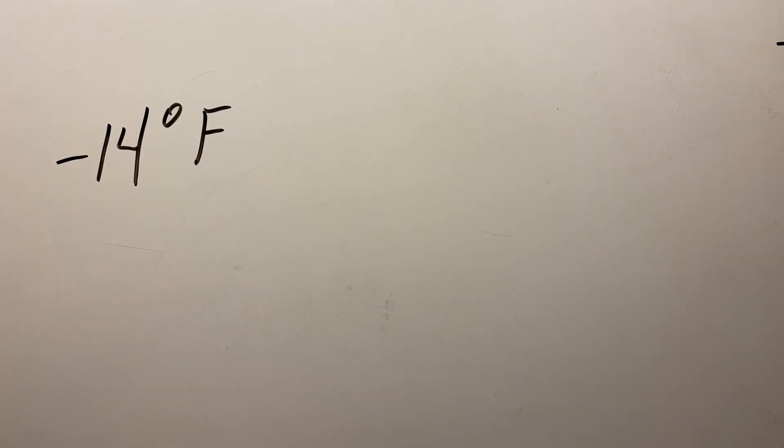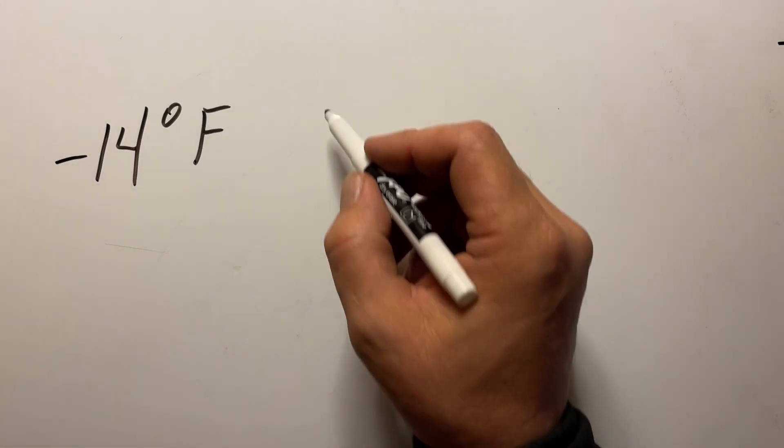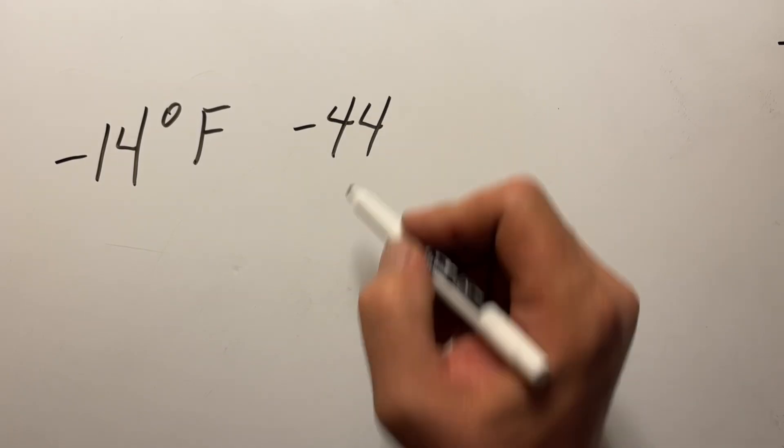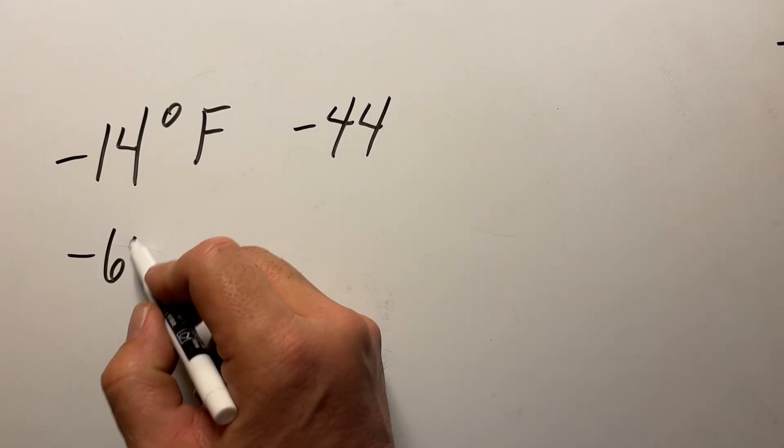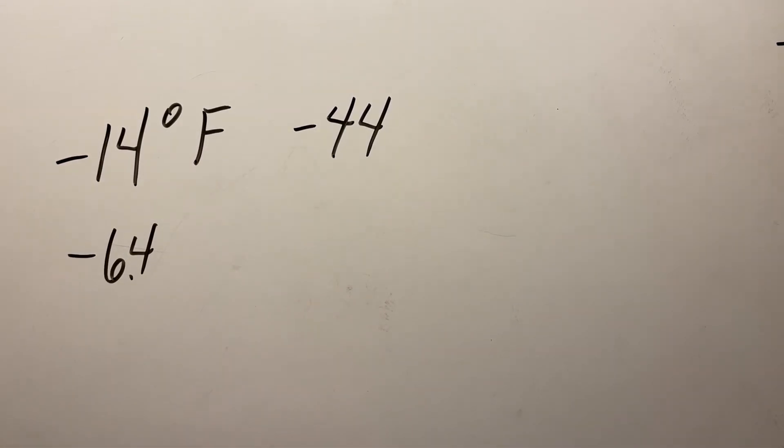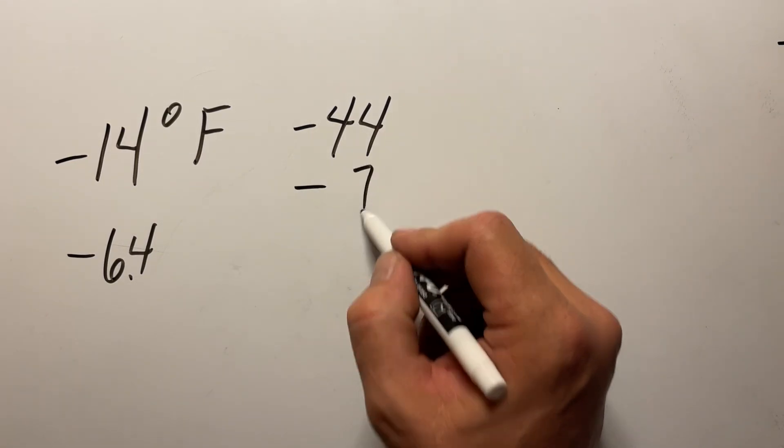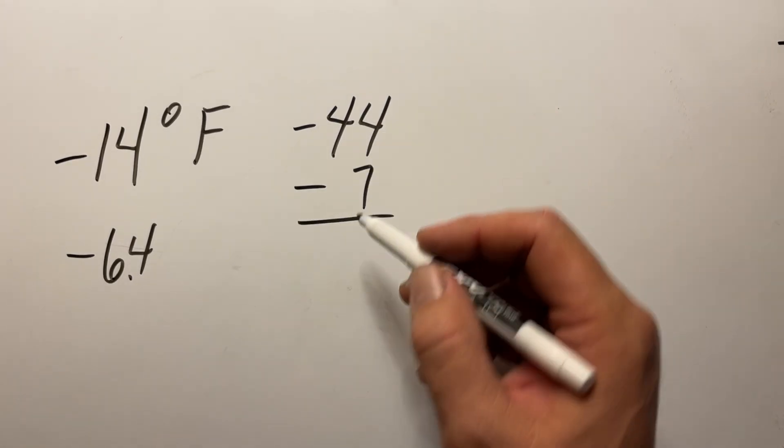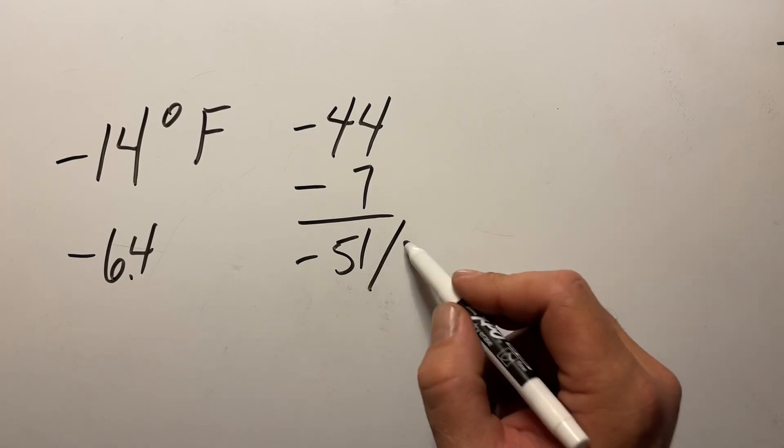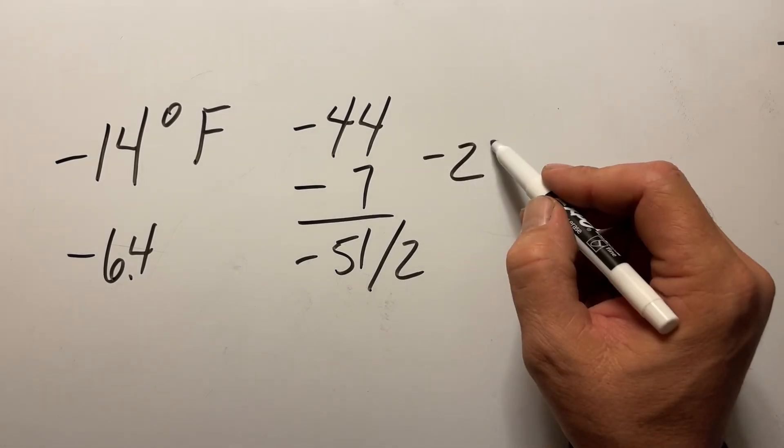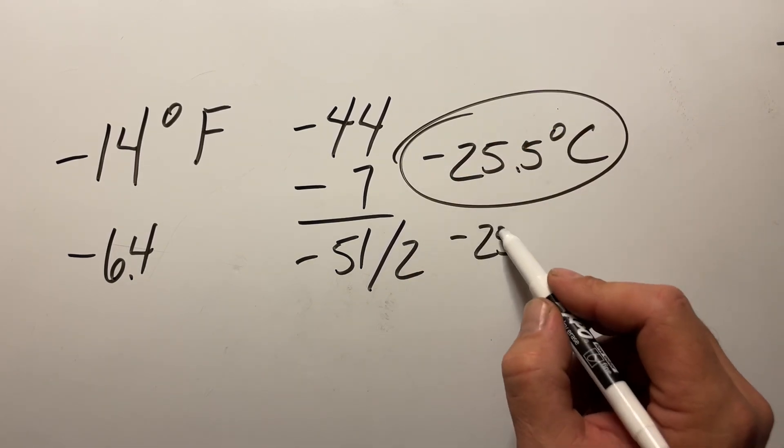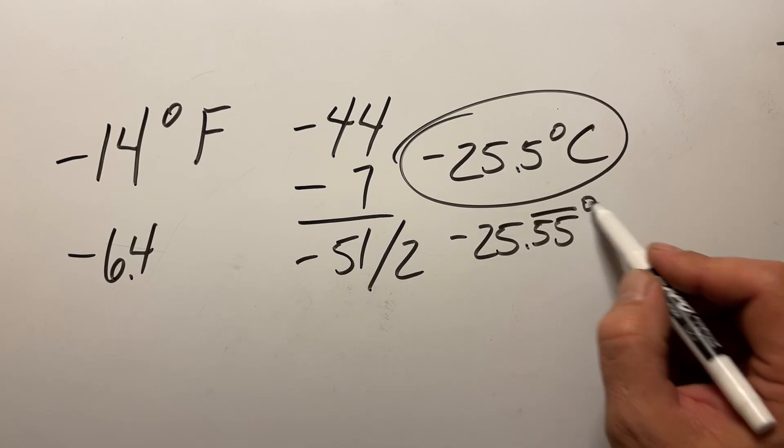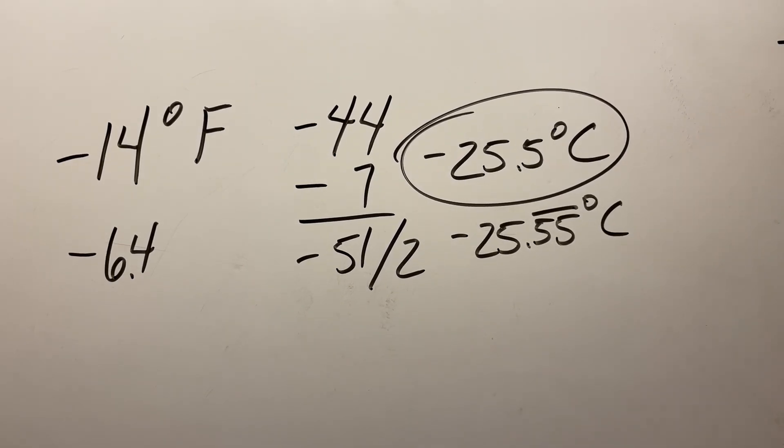The next one that we're going to work out is negative 14 degrees Fahrenheit. So just like before, we'll subtract 30, which will make this negative 44. Now the difference between 50 and negative 14 is minus 64 degrees. We'll move that over one decimal place, that becomes negative 6.4. We're going to round it down to negative 7. So negative 44 minus 7 is going to be negative 51. And when we divide that by 2, our answer will be negative 25.5 degrees Celsius.